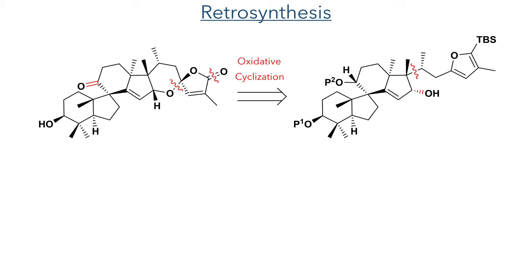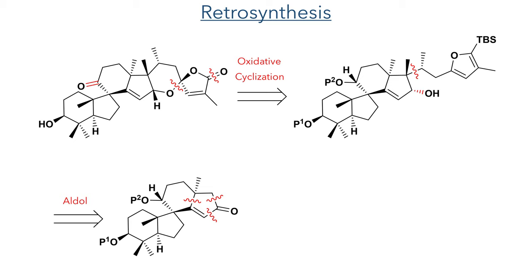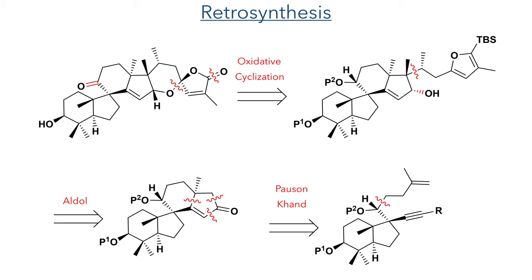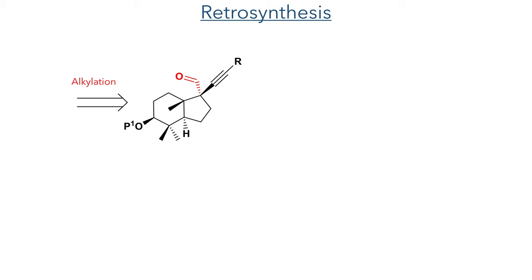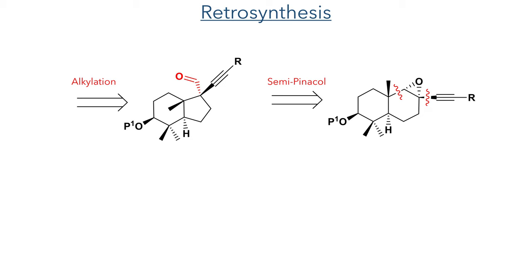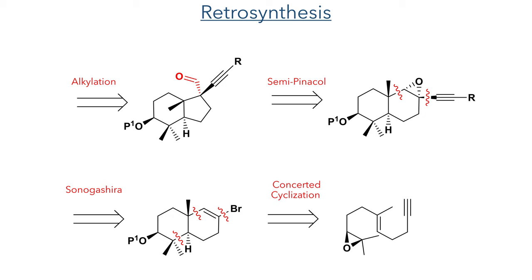The authors planned to use an oxidative cyclisation to install the spiroketal motif. The precursor to this reaction could be generated from a tetracyclic intermediate using aldol chemistry. A Pauson-Khand reaction could be used to generate this intermediate from a bicyclic precursor. This could be generated from alkylation of an aldehyde, which in turn could be produced using a semi-pinacol rearrangement. A Sonogashira coupling could be used to introduce the alkyne, and the precursor to this would be generated from a concerted cyclisation of a geraniol derivative.